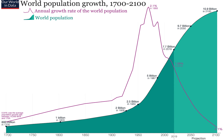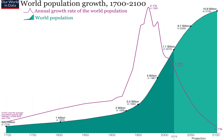But interestingly, if you look at this purple graph right here, it shows the annual growth rate of the world population — in other words, what was the percentage that the population grew in that particular year? And as you can see, it was never constant. If the population growth was purely exponential, the annual growth rate should stay constant, but as you see in this graph, it was changing all the time.